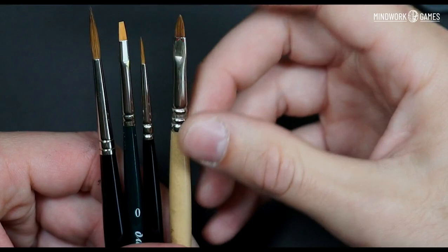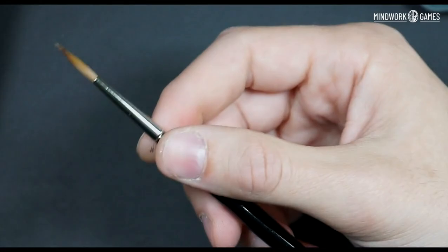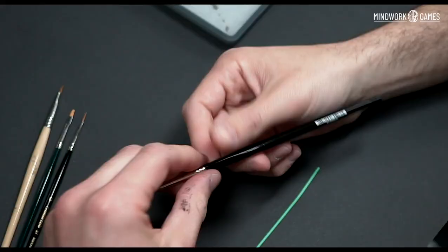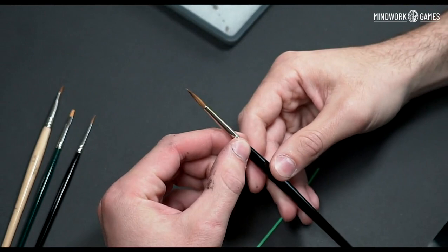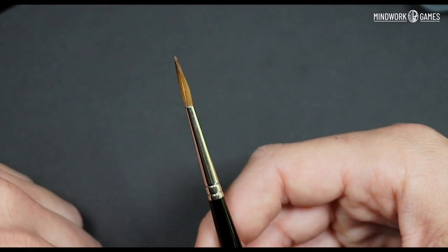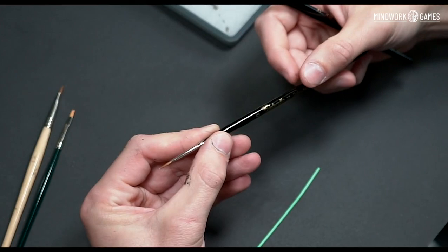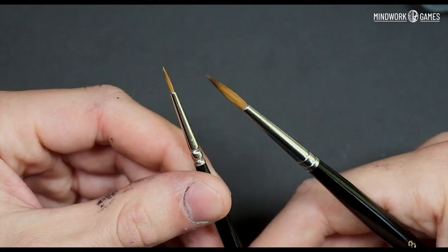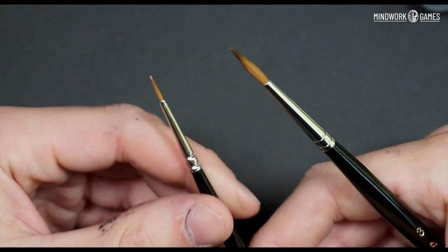The most important part of a brush for my opinion is the point and the size of the point. Usually I paint most of my figure with a huge number 3 or 2 because I love the capacity of the brushes to keep a lot of colors. In this way I am able to paint a lot of time without taking colors from the palette.